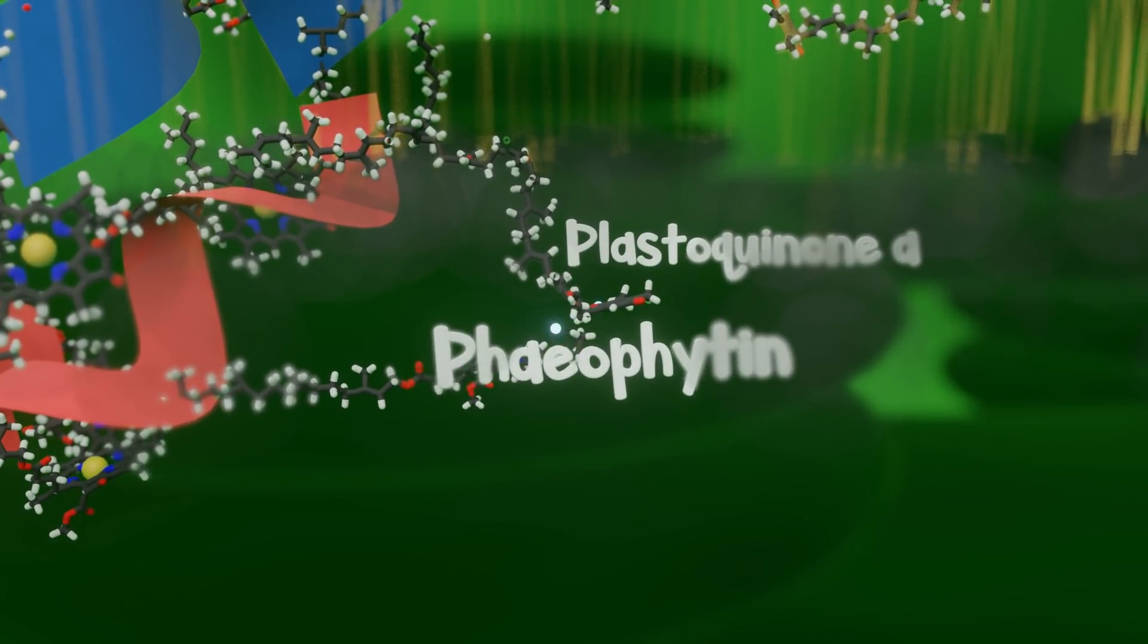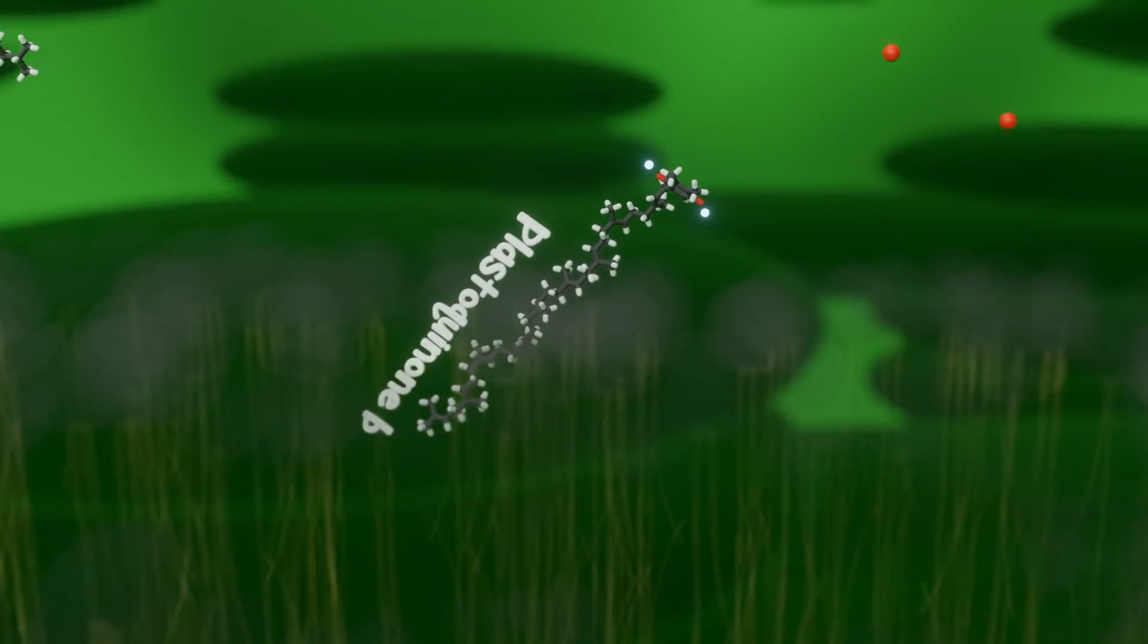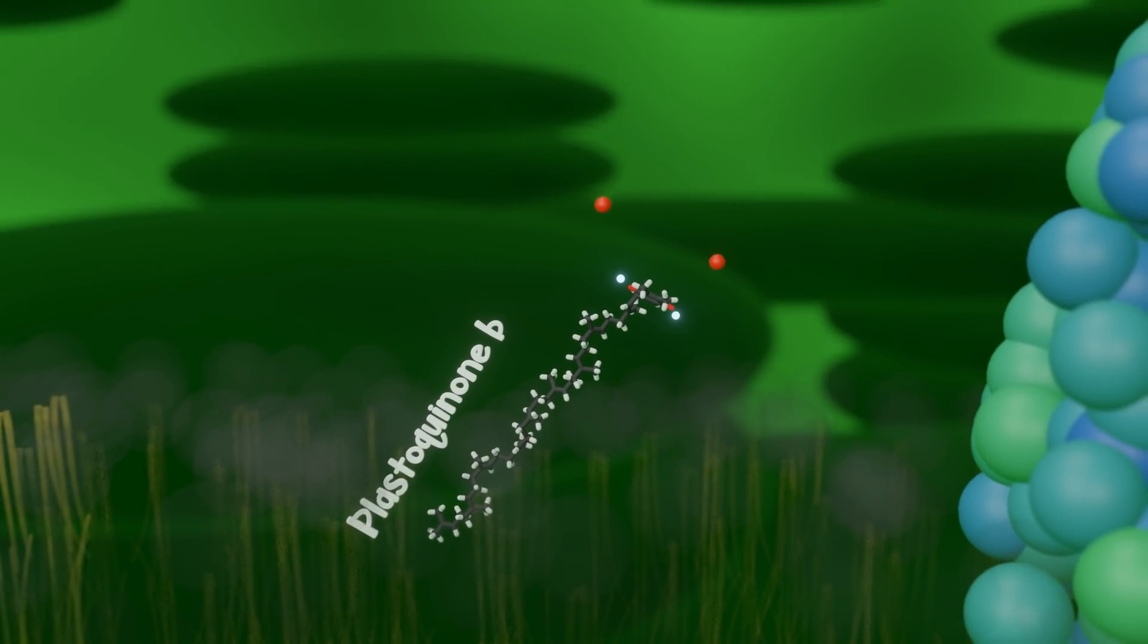Plastiquinone B then grabs two protons from the stroma, or outside area of the thylakoid.